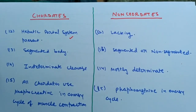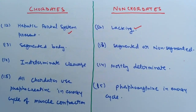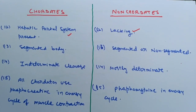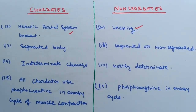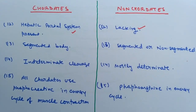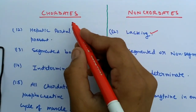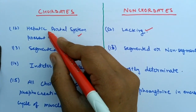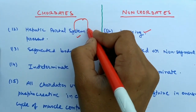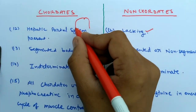The hepatic portal system is very well-defined in chordates but lacking in non-chordates. Food is digested in the gut, absorbed in the small intestine, and stored in the liver. The hepatic portal system is an adaptation in chordates to compensate for the time lag in circulation through the heart, allowing absorbed food to directly enter areas like the liver, kidneys, and adrenal glands.